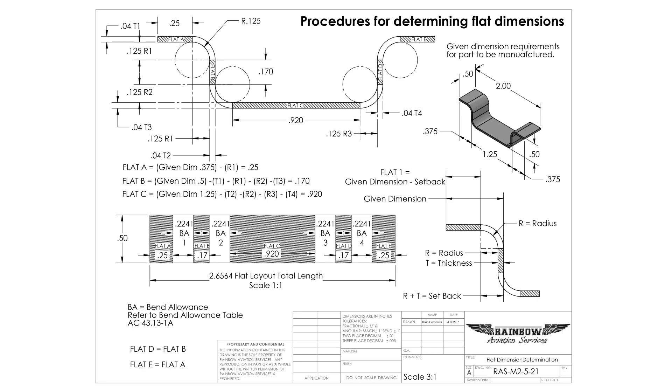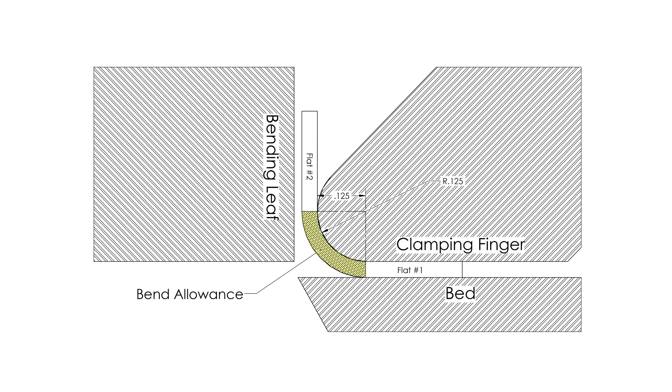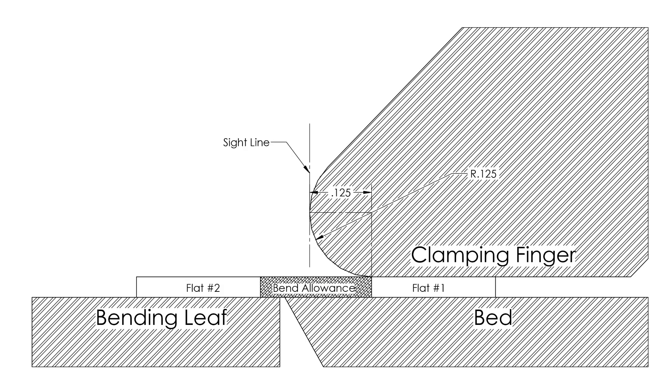The bend will begin at precisely the end of the flat section and continue bending to precisely the beginning of the next flat section. The trick here is: how do we position the flat layout so that the beginning of the bend allowance starts at exactly the bottom of the radius finger?